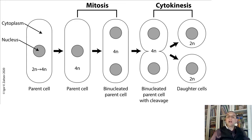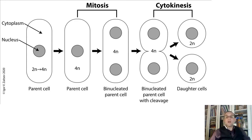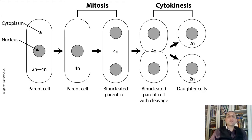In a single-cell organism, mitosis results in two new organisms. In multicellular organisms, mitosis increases the number of cells. For example, if you cut your skin, cells begin to divide to fill in the cut. When the surface of your skin is healed, cell division stops.